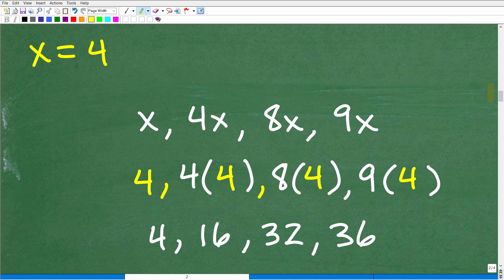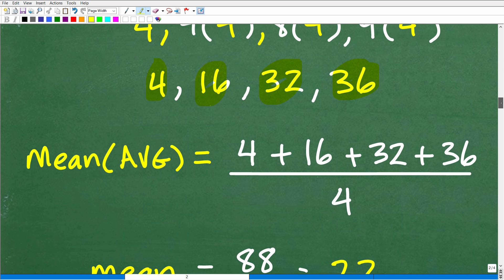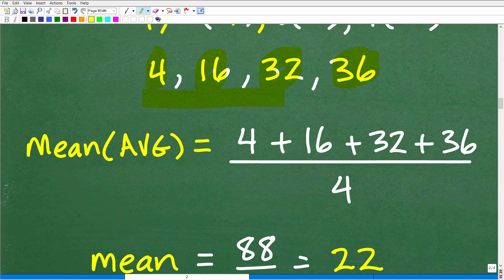So x is equal to 4. We're going to plug in 4 in each one of those terms right there. So we're going to get 4, 16, 32, and 36. Those are our actual pieces of data. And now to find the average or mean, all we need to do is to add up the total of our pieces of data here. So 4, 16, 32, and 36. We're going to add up and get that total and divide by how many numbers we have, which are 1, 2, 3, 4. This is how you find the average.